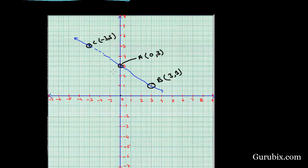This line is the graphical representation of both equations. We denote it as line K. It represents both 2X + 3Y = 9 and 4X + 6Y = 18, showing that the two equations are coincident lines. This is the solution of the example. Thank you.